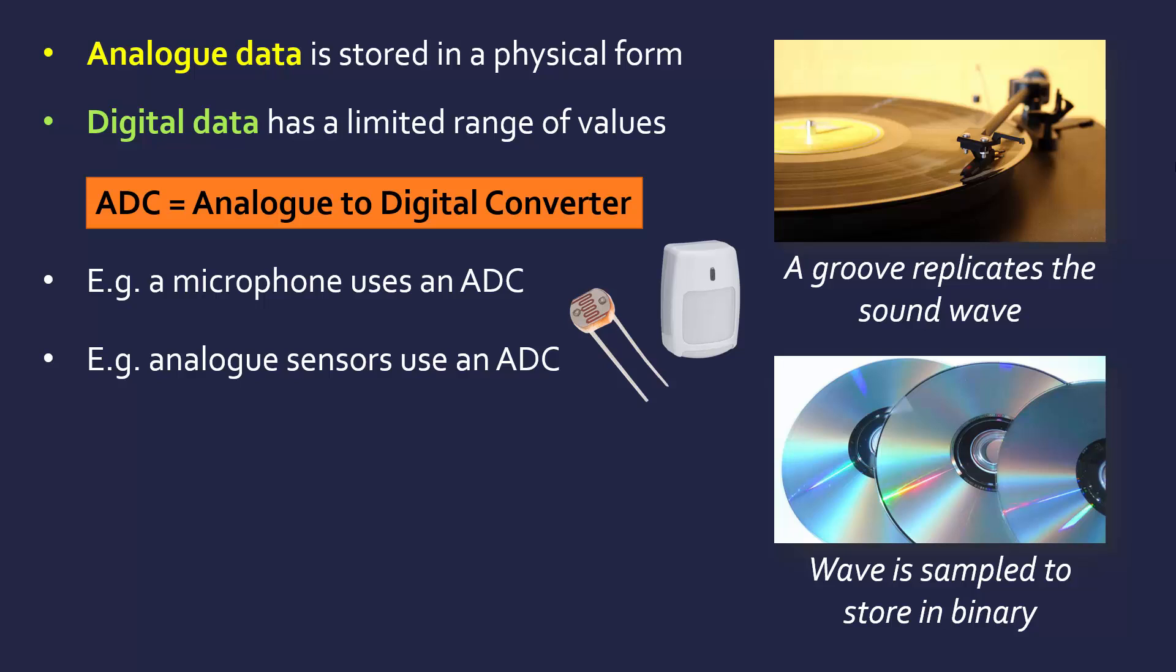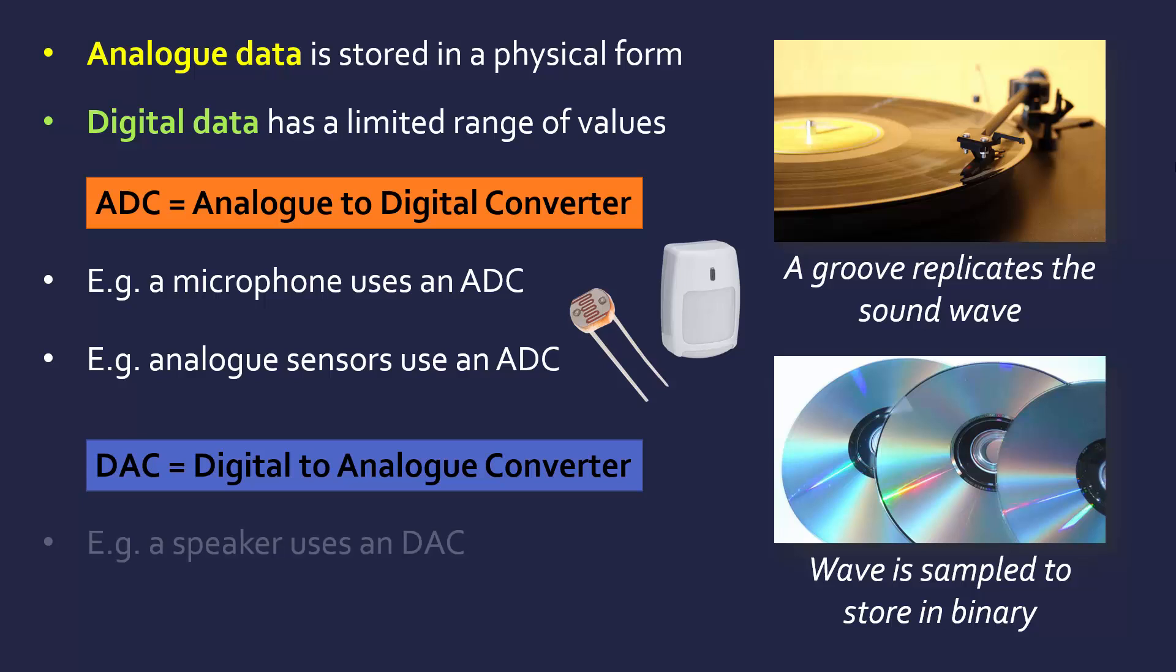But we do sometimes need to do the opposite process, going from digital to analog, using a DAC, a digital to analog converter. This is most commonly used inside a speaker. You're listening to me talk somehow now, and your device is using a DAC to convert that digital format in the video file to an analog signal which you can hear through your ears.